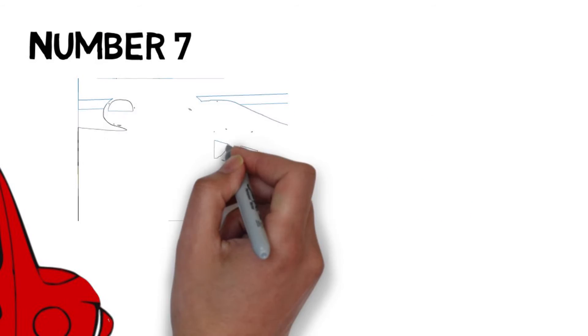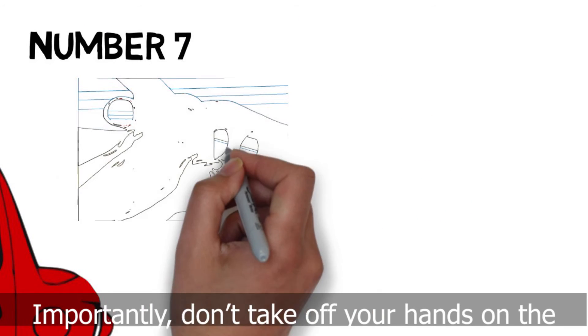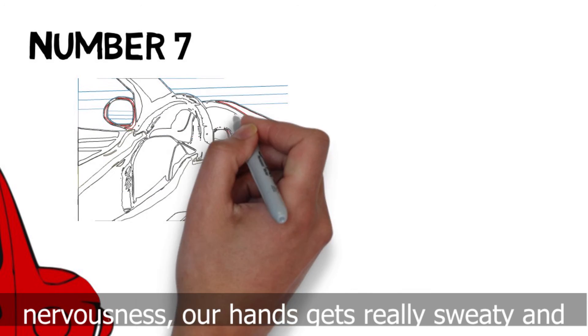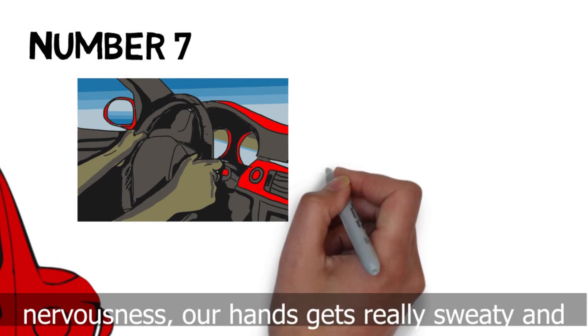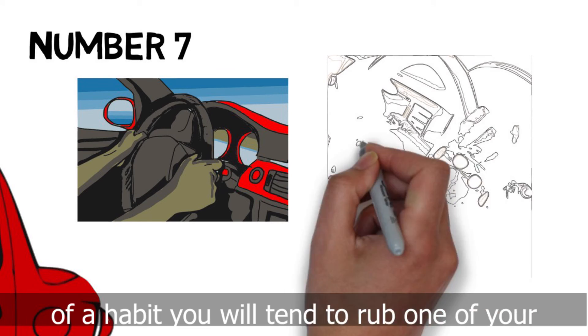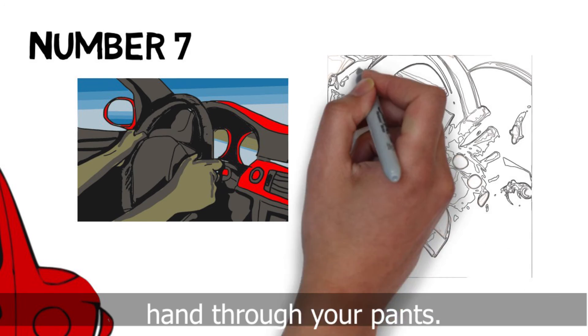Number 7. Importantly, don't take off your hands on the steering wheel. Sometimes out of nervousness, our hands get really sweaty and it will affect our handling of the vehicle, so out of habit you will tend to rub one of your hands through your pants.